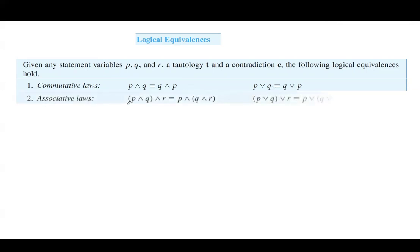Associative laws say that if you have P AND Q AND R, you can group the first two or the last two — it doesn't matter, they are equivalent. The same applies for OR: P OR Q OR R can be grouped as (P OR Q) OR R, or P OR (Q OR R). Note that we are using the exact same operation — this is association, not distribution. All operations remain AND, or all remain OR.